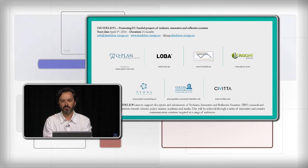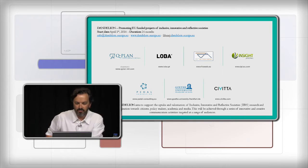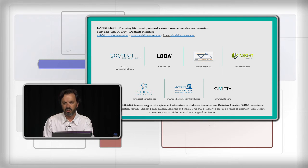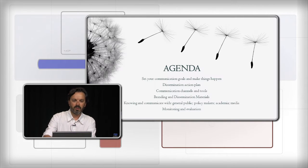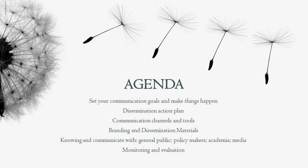You can see on this slide our consortium — we are seven partners, most of them communication agencies used to communicating not only projects but products and services in general. We also have GoToUniversity from Frankfurt, our expert in the SSH team. Today's agenda: we want to explain how a communication plan can be set up, what channels and tools we can use, some words about branding and dissemination, how to communicate with specific target groups — general public, policy makers, academia, and media — and finally how to monitor and evaluate the dissemination and communication plan.